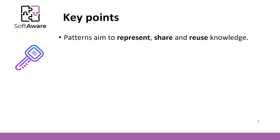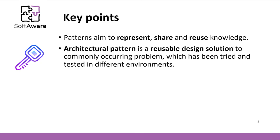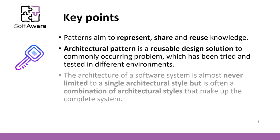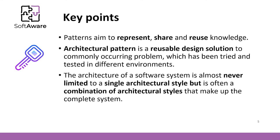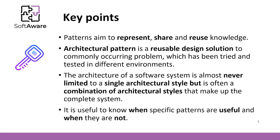To summarize: patterns aim to present, share and reuse knowledge. An architectural pattern is a reusable design decision to the commonly occurring problem that has been tried and tested in different environments. The architecture of a software system is almost never limited to a single architectural style, but is often a combination of architectural styles that make up the complete system. It is useful to know when specific patterns are useful and when they are not. You can always investigate the details of the patterns later — you know what to look for.